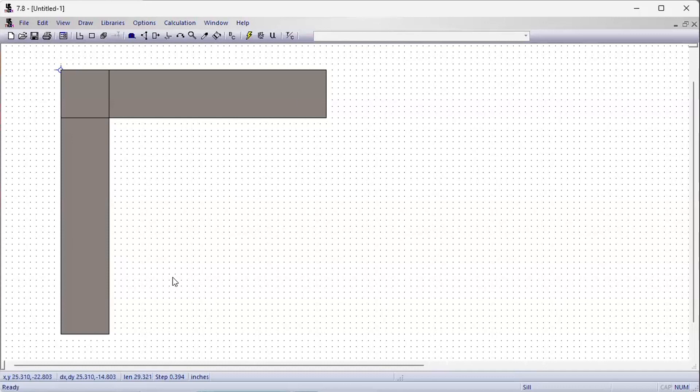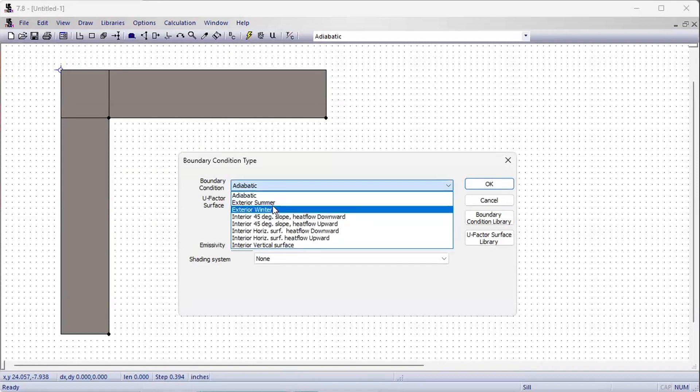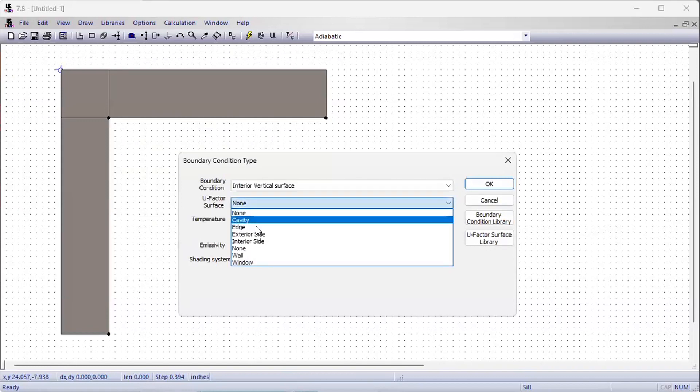And we define next the boundary conditions. Double click on the next item when you want to go directly into the dialog. We make it an interior vertical surface. And we apply the interior side tag here, so the U factor surface tag. Here we want to measure the average U value that we find.